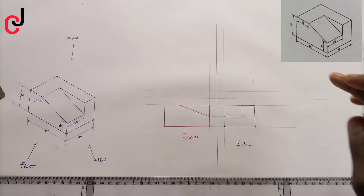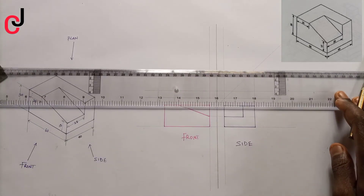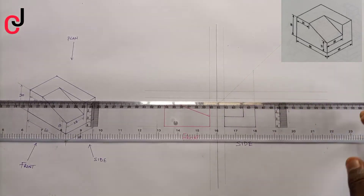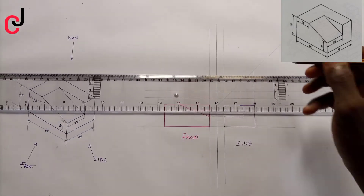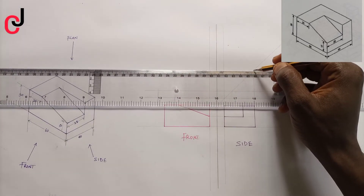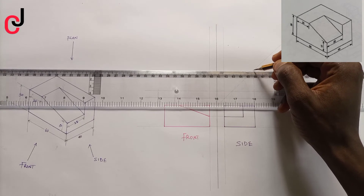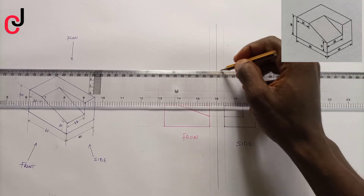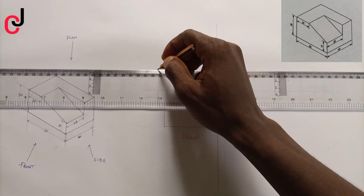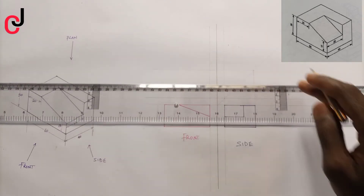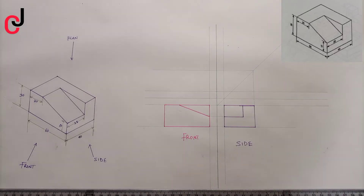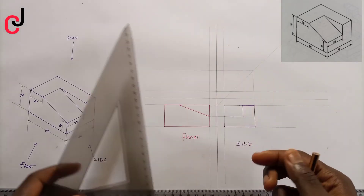We're forming a rectangular shape at the top. Once the projection hits our 45-degree line, from that point we project it to my left. We'll also project from our front view to the side.